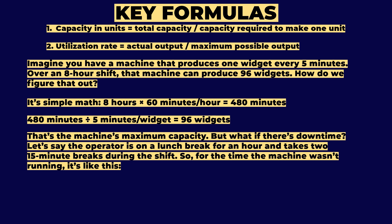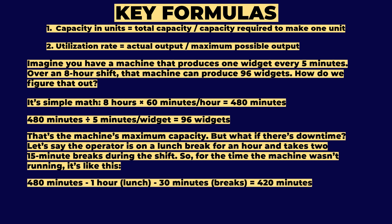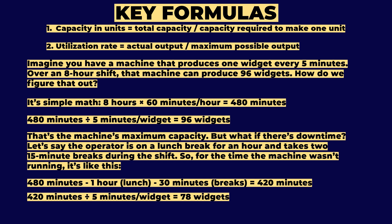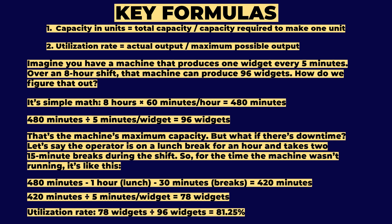But what if there's downtime? Say the operator is on a lunch break for an hour and takes two 15-minute breaks — that's 480 minutes minus 60 minutes for lunch and 30 minutes for breaks, leaving 420 active minutes. 420 ÷ 5 = 84 widgets actually produced. The utilization rate is then 84 ÷ 96 = 87.5% — showing how much of the machine's potential capacity is being used. If the utilization rate was higher, it could mean fewer breaks or increased speed.